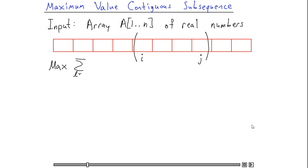If I sum all the numbers from l equals i up to j of A[l], then that quantity is maximized. Note that this problem is only interesting if there are negative numbers in my array. Otherwise, I would just select the entire array as my answer.